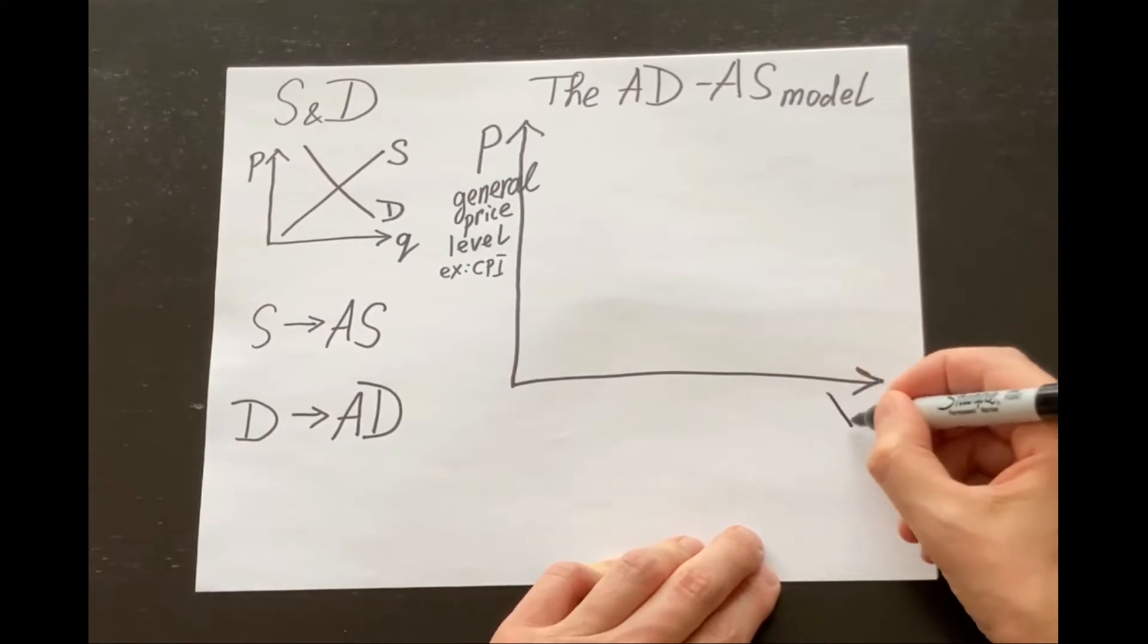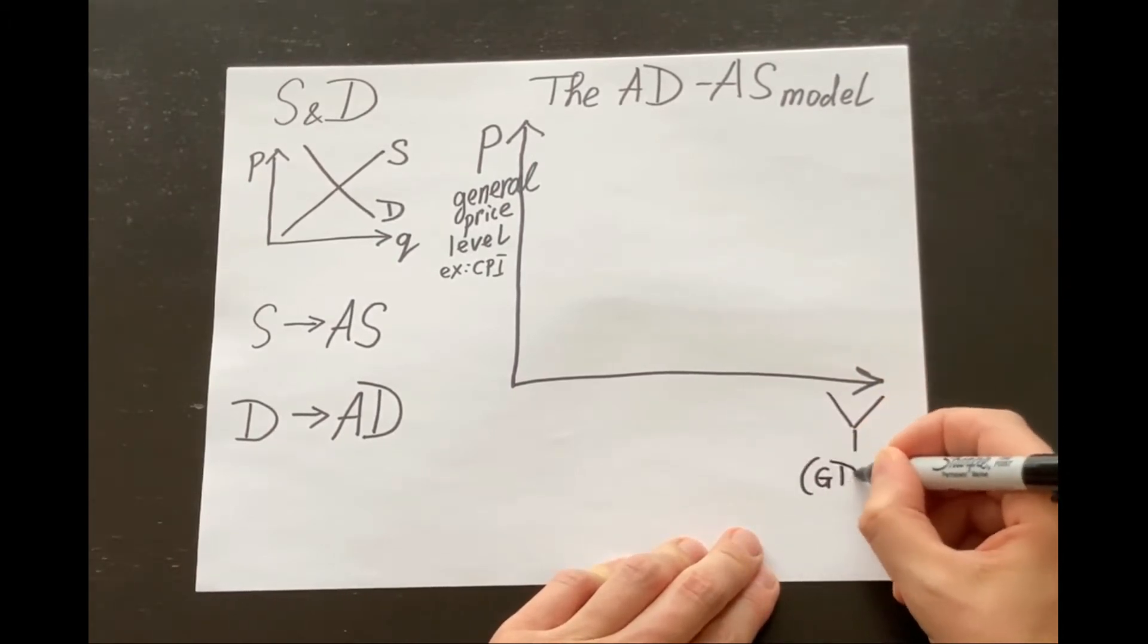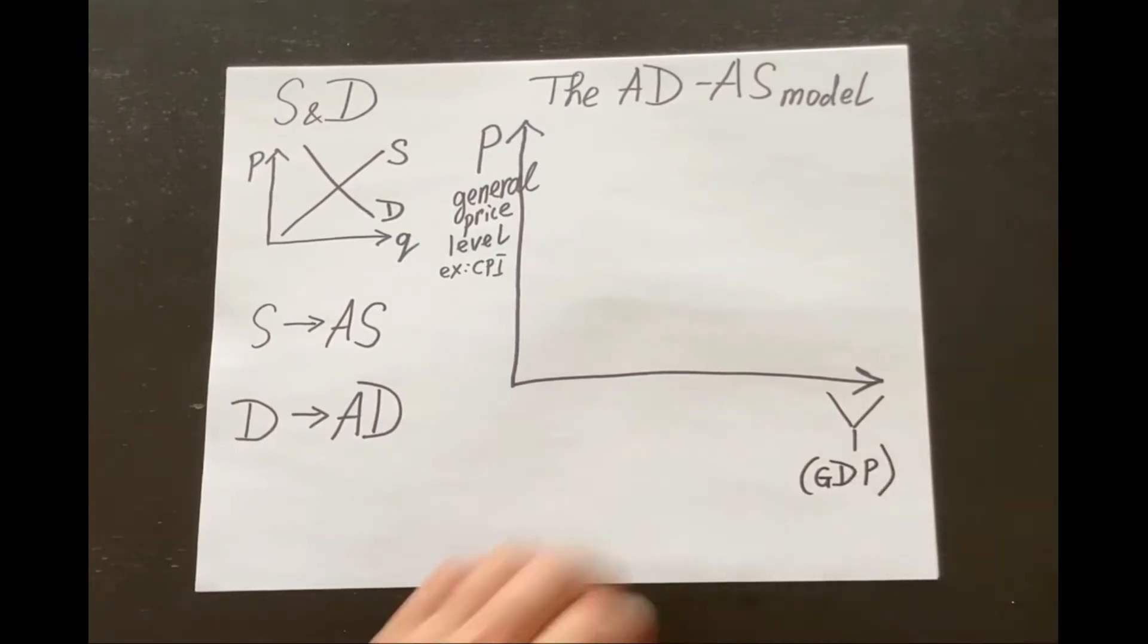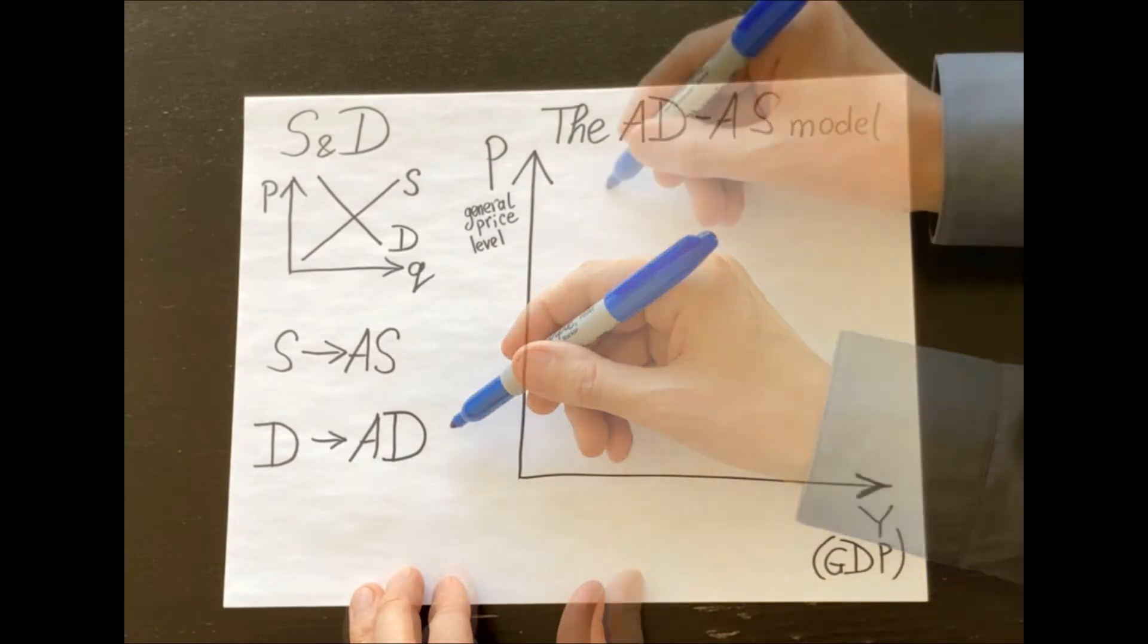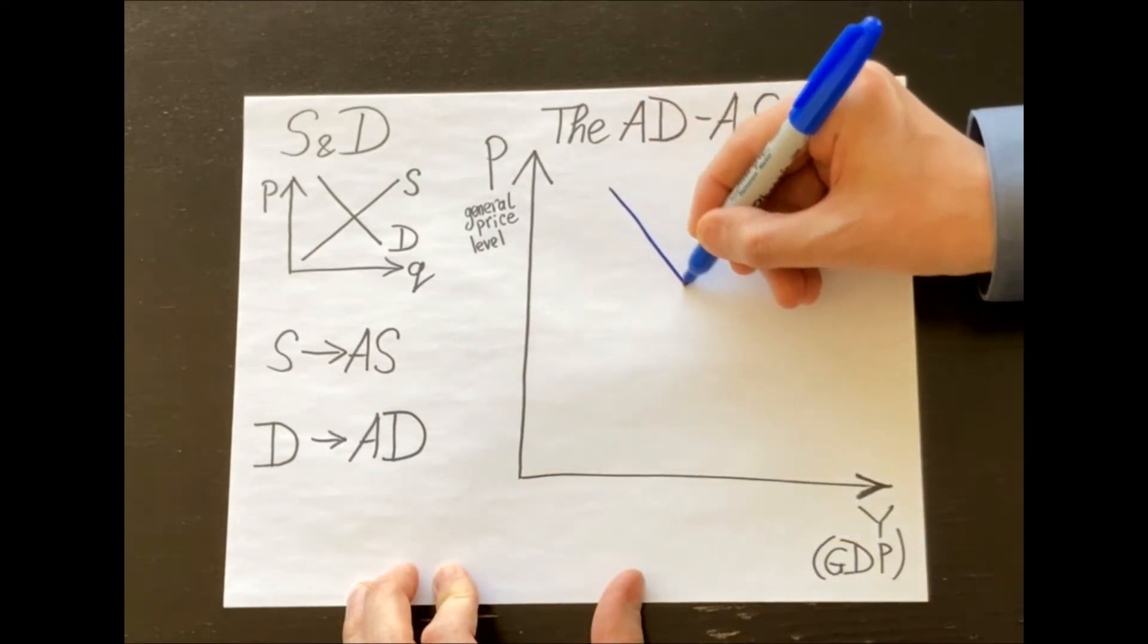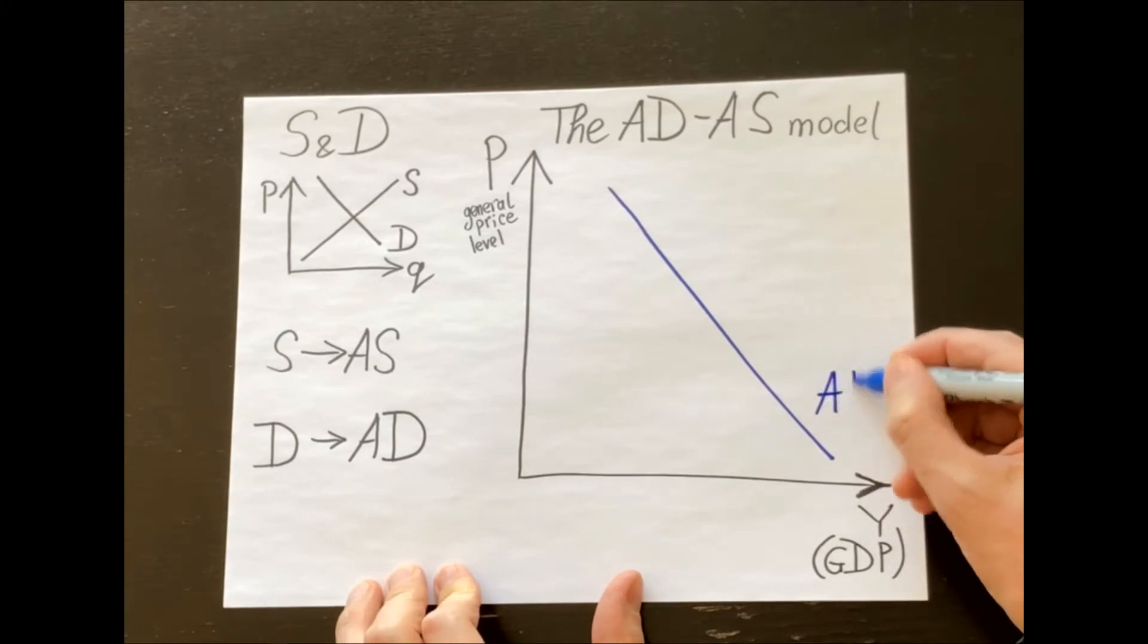And on a horizontal axis we put the gross domestic product, the GDP, denoted by the capital letter Y. First, aggregate demand. Aggregate demand looks exactly like a normal demand. It's a downward-sloping line.